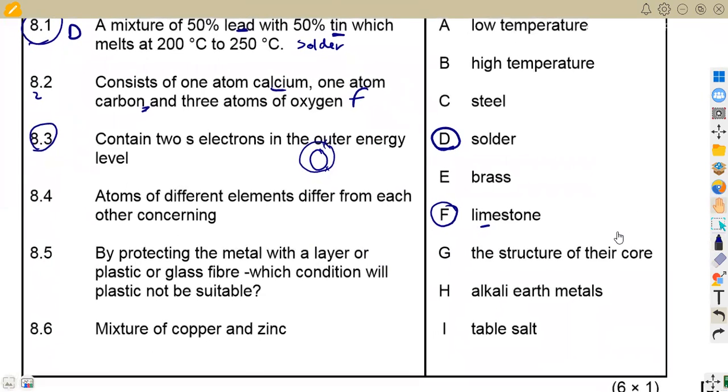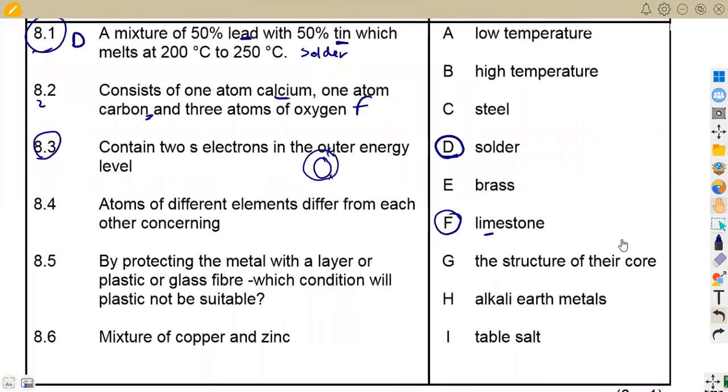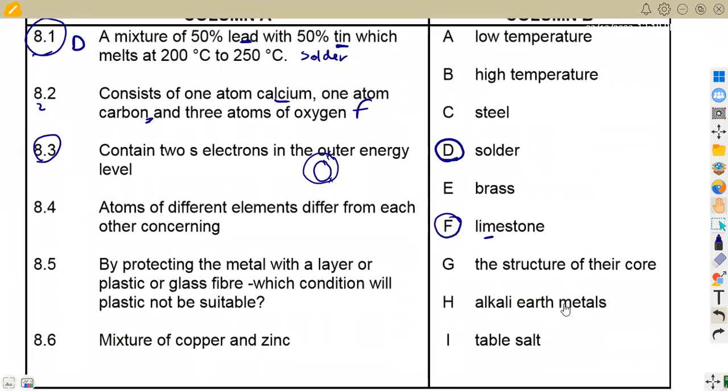Table salt. No. Alkali earth metals. Yes, that can work on the alkali earth metals. Every alkali, all the alkalis that we have. That is what you can have. So this is, can be H.